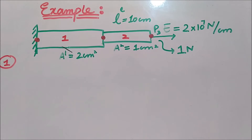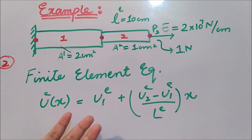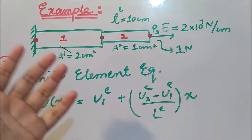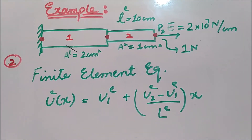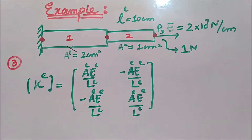Moving to the second step of the direct method — the formulation of the shape function — we use the standard finite element equation. Then in the third step we formulate the element-level stiffness matrices and load vectors.